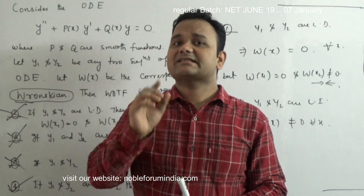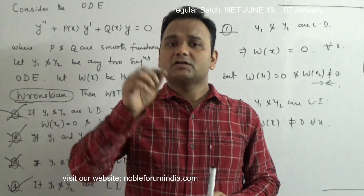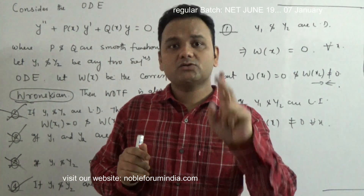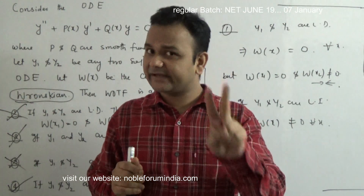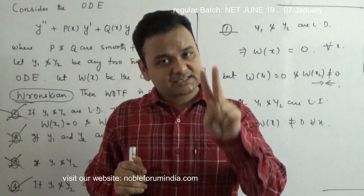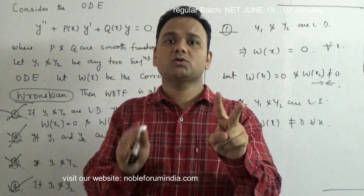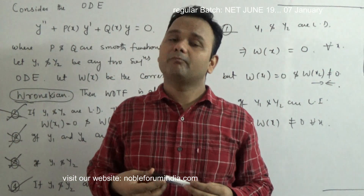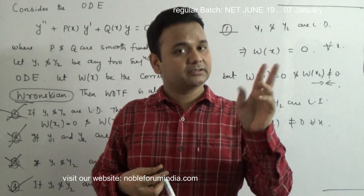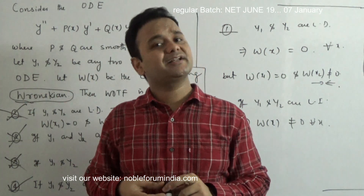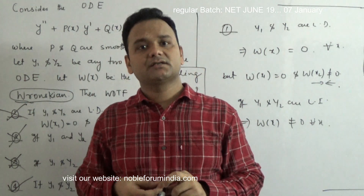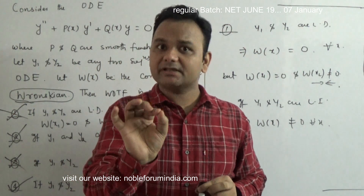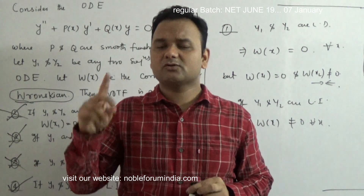As an exercise, I am asking you to write in the comment section: find two functions y1 and y2 of x such that the Wronskian of these two is zero for all x, but y1 and y2 are linearly independent.